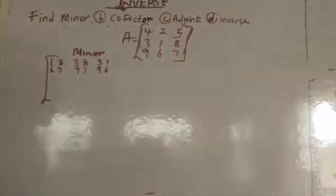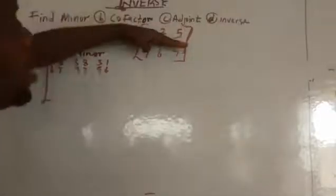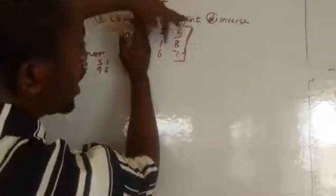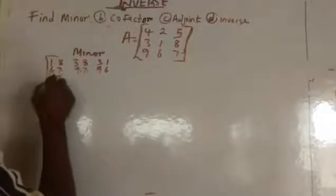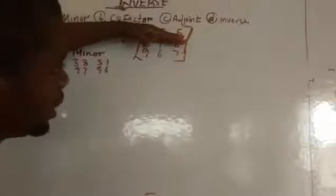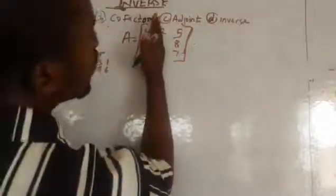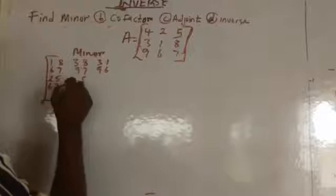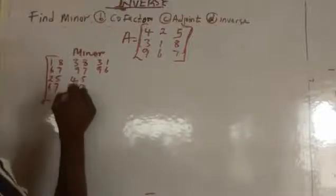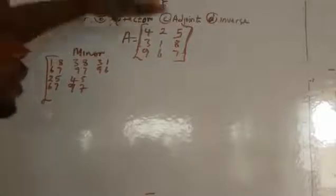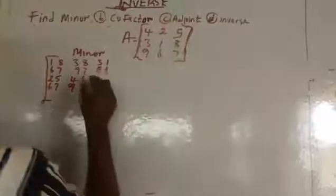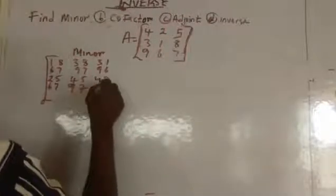Now we go to the second row. We delete the second row and first column — we have 4296. Delete the second row and second column — we have 4597. Delete the second row and third column — we have 4296.